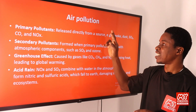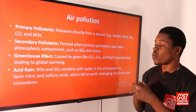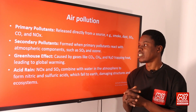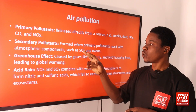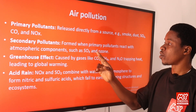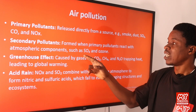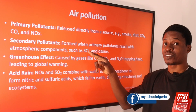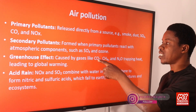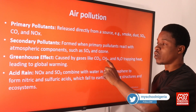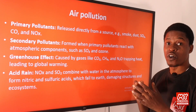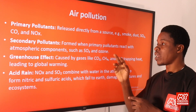Secondary pollutants are not directly from a source but are formed when primary pollutants react with atmospheric components — such as SO₃ and ozone (O₃). For example, SO₂ reacting with one atom of oxygen produces SO₃. SO₂ + O → SO₃, or SO₂ + ½O₂ → SO₃. Ozone is formed when oxygen molecules react together. These are examples of secondary pollutants — they emanate from a primary source through atmospheric reactions.